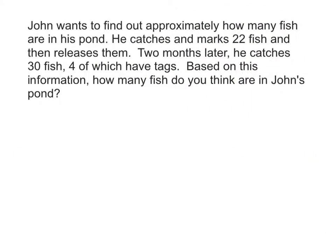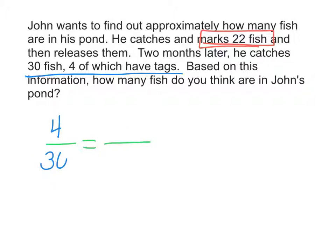Let's take a look at one more sample. John wants to find out approximately how many fish are in his pond. He catches and marks 22 fish and then releases them. Two months later, he catches 30 fish, four of which have tags. Based on this information, how many fish do you think are in John's pond? This is a proportional relationship. He tags 22 total fish, but we'll save that for the end and focus on when he comes back: he catches 30 fish, four of which have tags. So four out of 30 fish have tags.